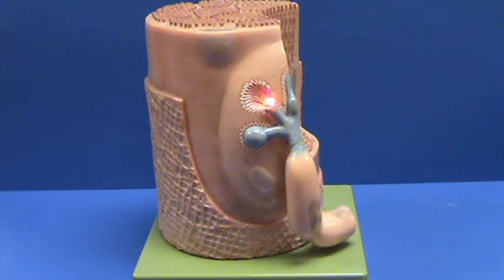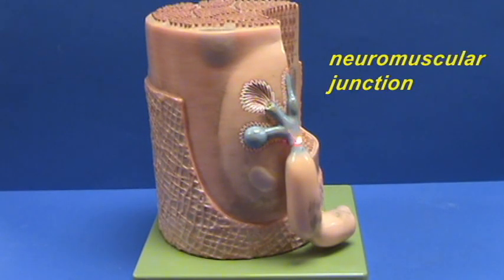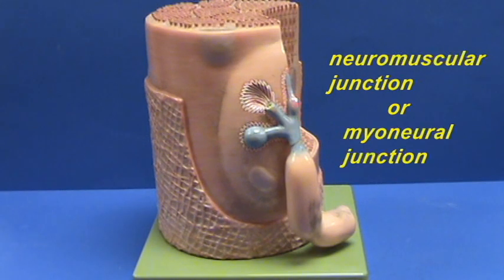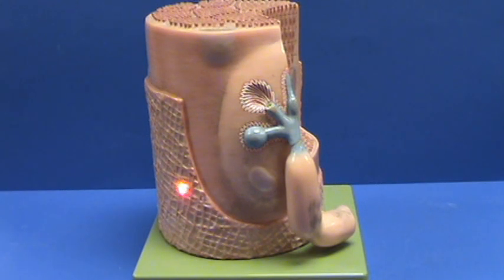So right over here, this is what is referred to as your neuromuscular junction, or your myoneural junction. Right over here, we have the outer connective tissue component of this skeletal muscle fiber.